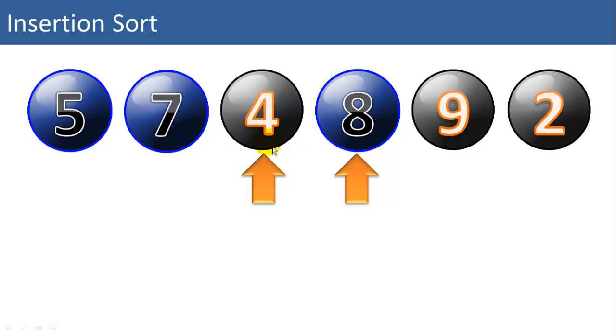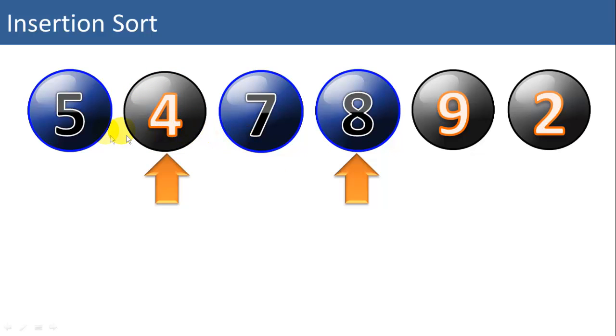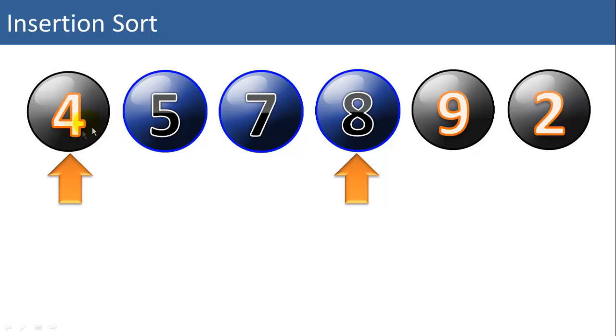Is 4 less than 8? Yes, it is, so we swap. Is 4 less than 7? Yes, so we swap. Is 4 less than 5? Yes, so we swap. Now the 4 is in correct position, and the 4 through 8 are in the sorted part of the list.